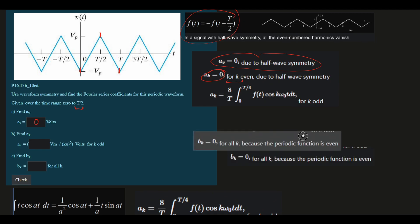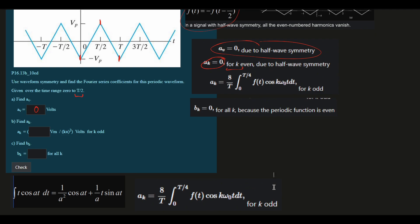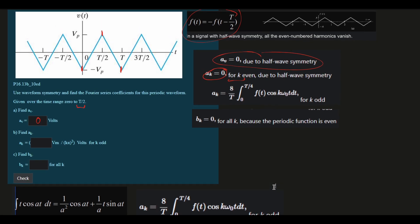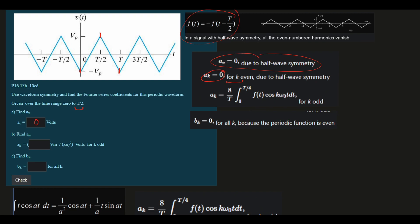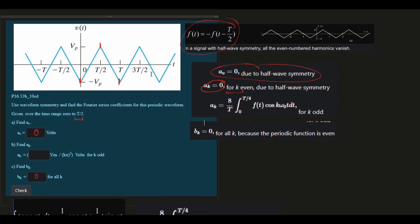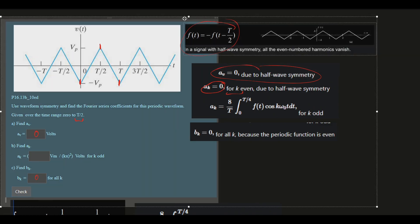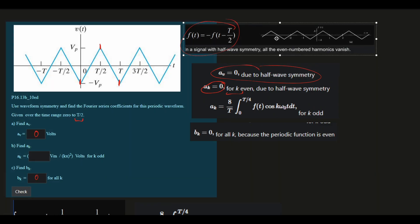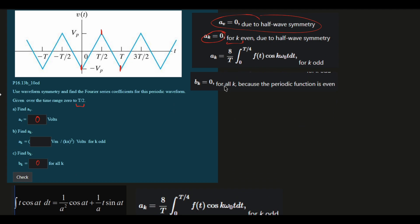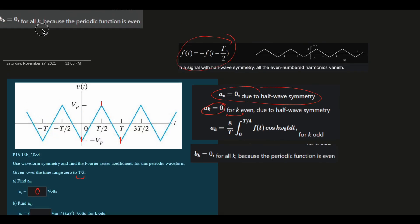Now, for B_k, I forgot to include this, but B_k is equal to 0 for all k because the periodic function is even. So B_k is also going to be 0. We have this equation for A_k, which is really nice. I'm going to move away the half-wave symmetry reference and the B_k, but I'm going to leave the A_k because we need this equation to solve for what we're doing.